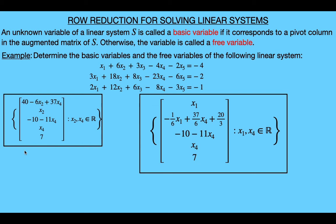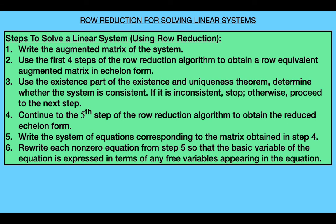So now that we've shown how to find the solution set for this linear system, let's generalize this process so that we can find the solution set for any linear system. Here we've outlined a step-by-step procedure. The first thing we do is write down the augmented matrix of the system. Next we use the first four steps of the row reduction algorithm to obtain an echelon form of the augmented matrix. After that we use the existence part of the existence and uniqueness theorem to determine if the system is consistent. If it's inconsistent, we stop there because we know the solution set is empty. If it is consistent, then we proceed to the next step, which says to continue the row reduction algorithm to obtain the reduced echelon form of the matrix. Once we have the reduced echelon form, we can write the corresponding system of equations, and then rewrite each non-zero equation so that the one basic variable in each equation is expressed in terms of any free variables appearing in the equation. Then once we do this, we'll have the expressions needed to write the solution set.